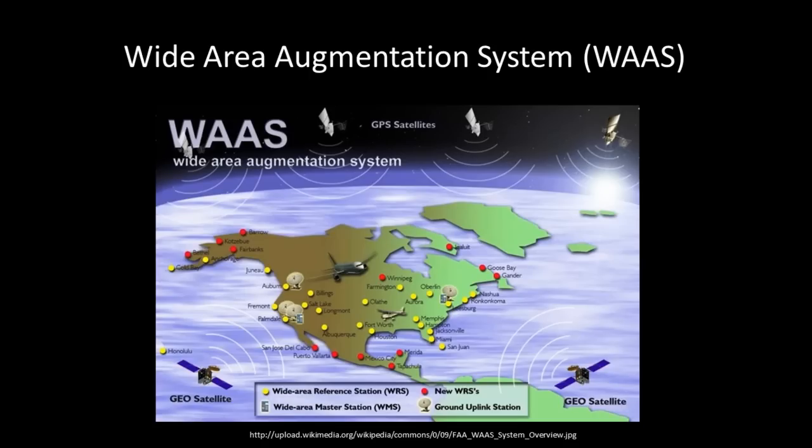The corrected differential message is then broadcast through one of two geostationary satellites, or satellites with a fixed position over the equator. The information is compatible with the basic GPS signal structure, which means any WAAS-enabled GPS receiver can read the signal.